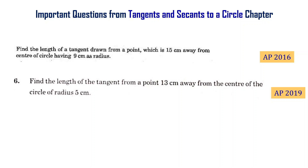Find the length of a tangent drawn from a point which is 15 centimeters away from the center of a circle having 9 centimeters as radius.